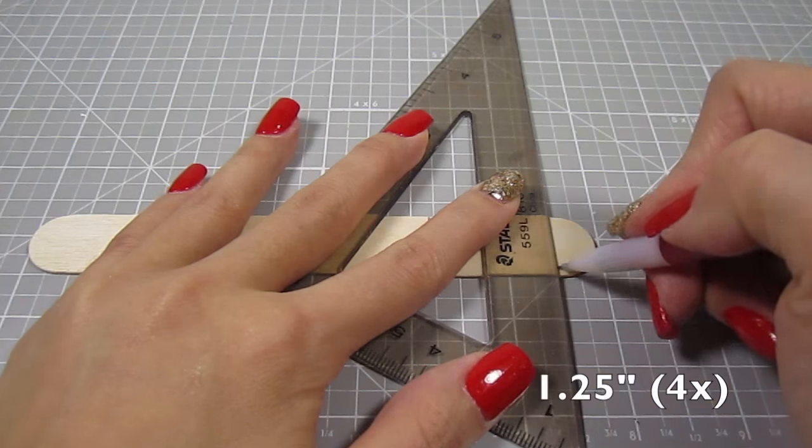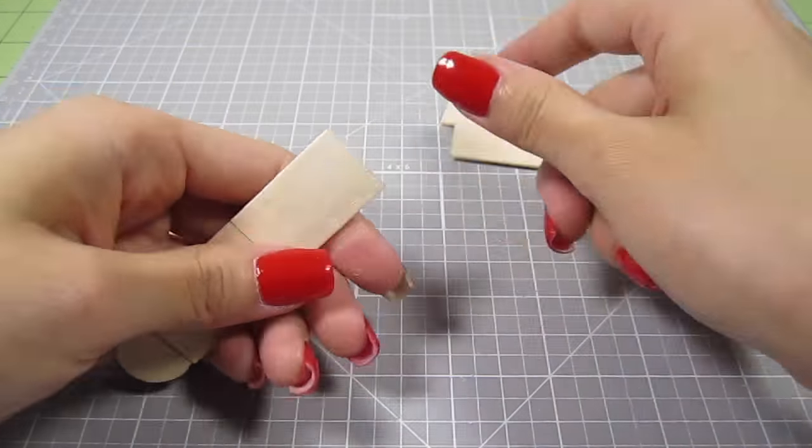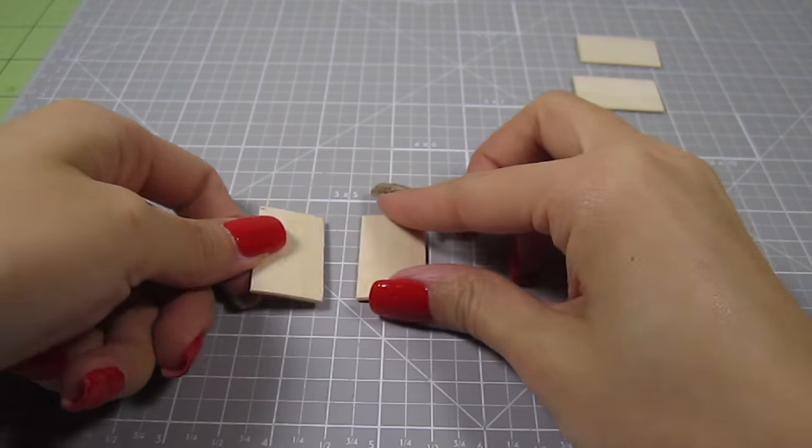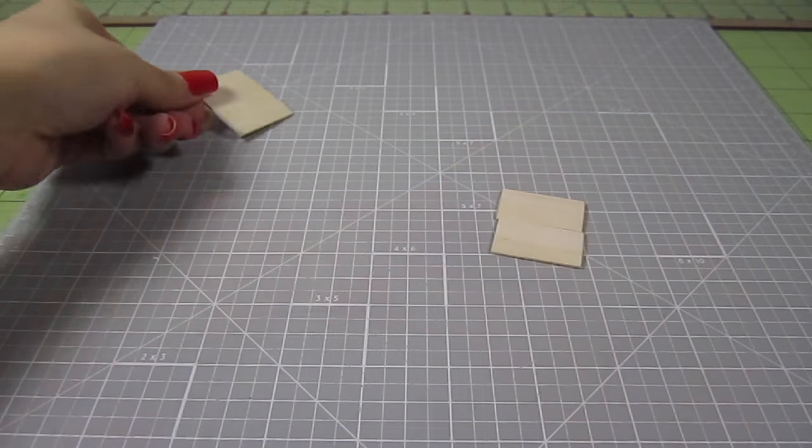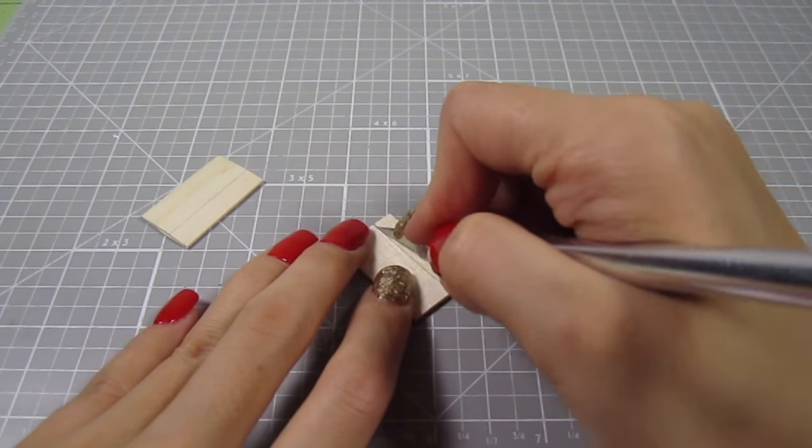I grab another jumbo popsicle stick and cut out 4 1 1⁄4 inch sections. Take 2 of these and glue them together. This will be the front for the biggest drawer. For the other 2 pieces, draw a line at the 1⁄2 inch mark and cut off the excess. These will be the front for the 2 smaller drawers.